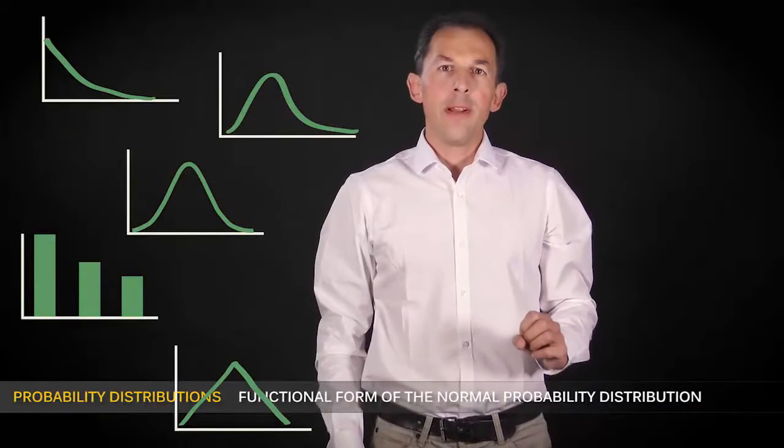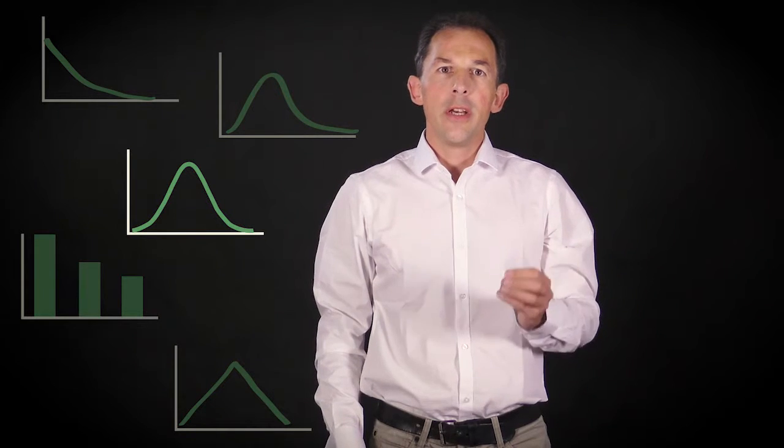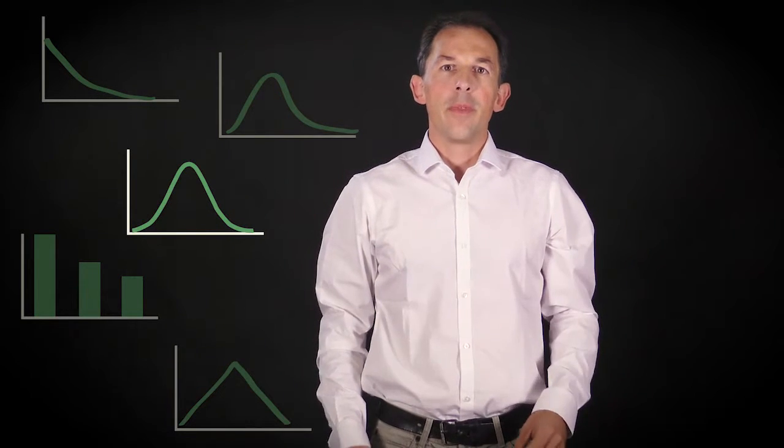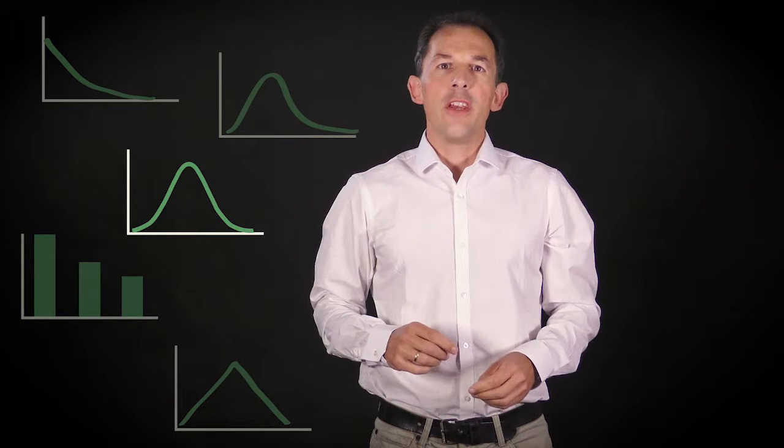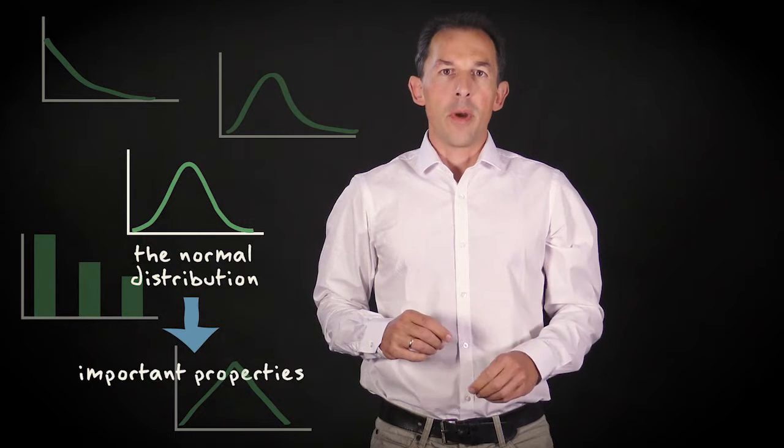From all the possible probability distributions, one stands out because it's the distribution that is encountered very frequently. It's called, very appropriately, the normal distribution function. In this video I'll explain its most important properties.